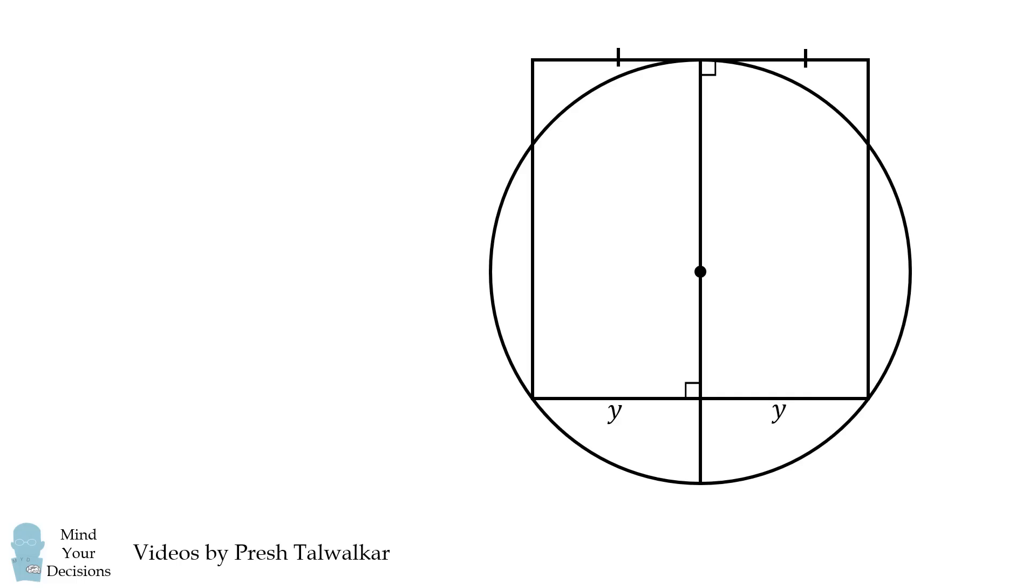And now, if this is the center of the circle, this length will be equal to r. And this length will also be a radius of the circle. Now if this distance is equal to x, what must x be equal to? Well, we want the entire side of the square to be equal to 2y. Therefore, we must have x plus r is equal to 2y, which means x is equal to 2y minus r.